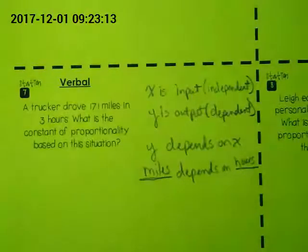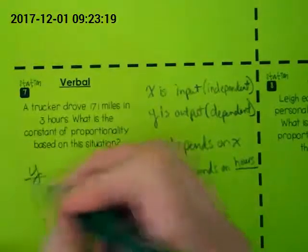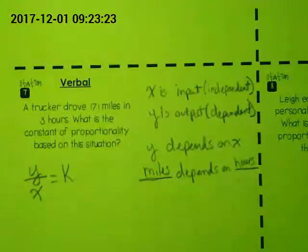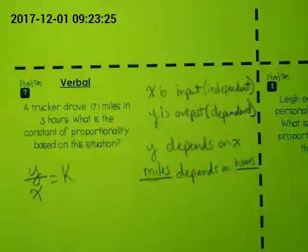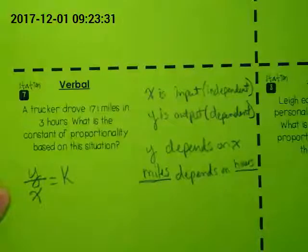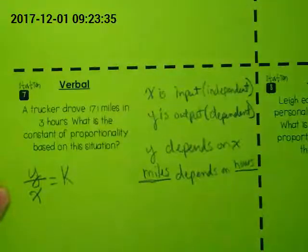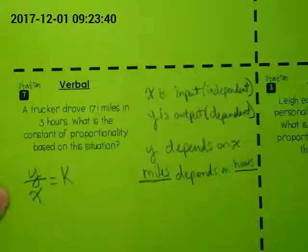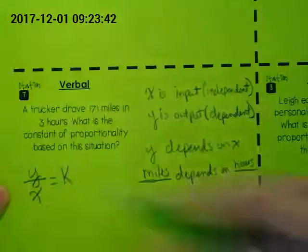Yesterday, you guys were starting to fill in tables, and you wanted to put the Y on the top of the table because we've done so much with Y divided by X gives us K. That's giving us our constant. A table is giving us our inputs and our outputs. This is figuring out, if he drives 171 miles in three hours, how many miles does he drive in one hour? We want to always try to, for the constant, get it down to the unit rate.